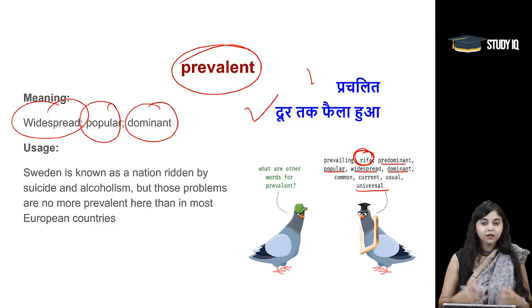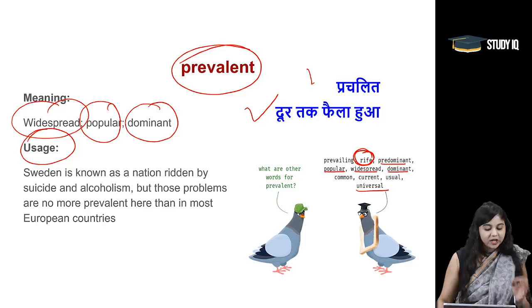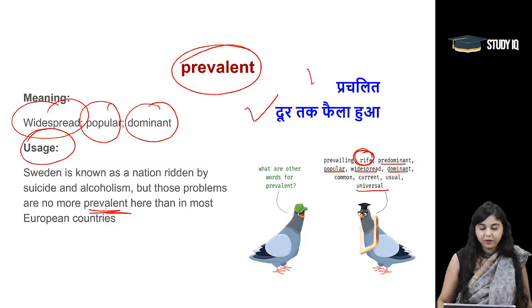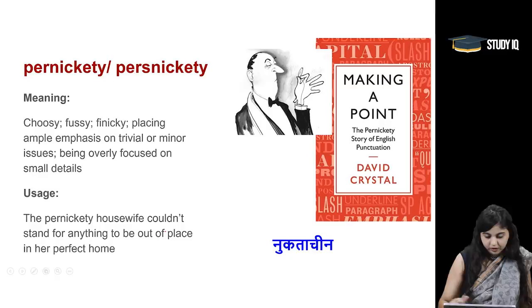Let's look at the usage. Sweden is known as a nation ridden by suicide and alcoholism, but those problems are no more prevalent here than in most European countries. So, jab aap prachalit koi cheeze hoti hai, uske liye prevalent shabd ka prayok karte hai.